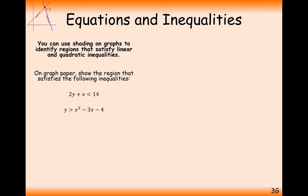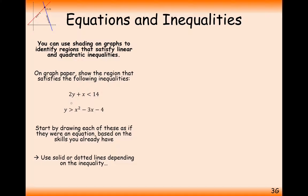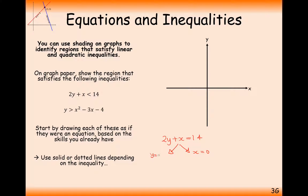Let's move on to a trickier one — a linear and a quadratic this time. As before, start by drawing the equations of the lines. For 2y plus x equals 14, we set y equals 0 to get x equals 14, giving coordinate (14, 0). Then set x equals 0 to get 2y equals 14, so y equals 7, giving coordinate (0, 7).